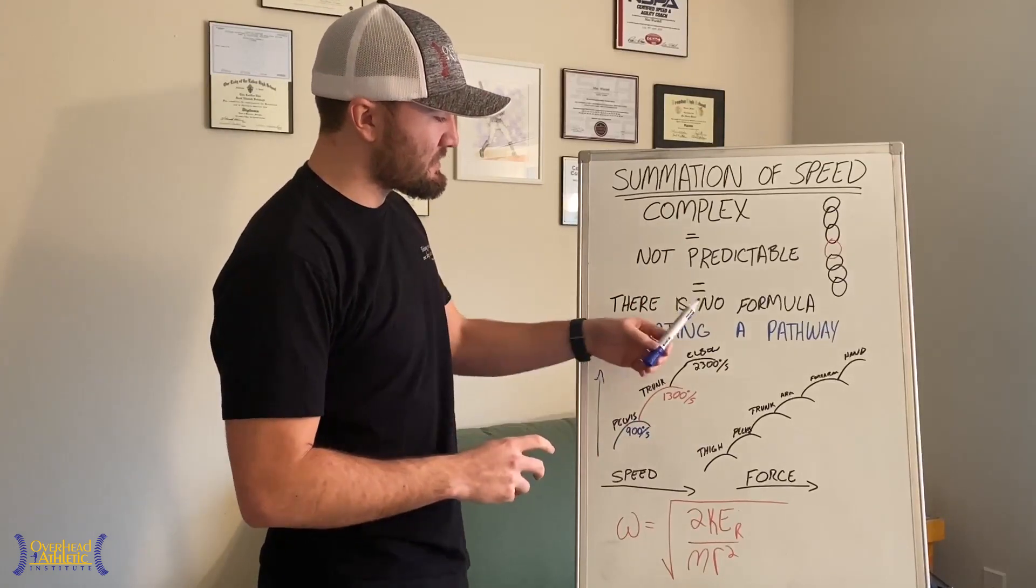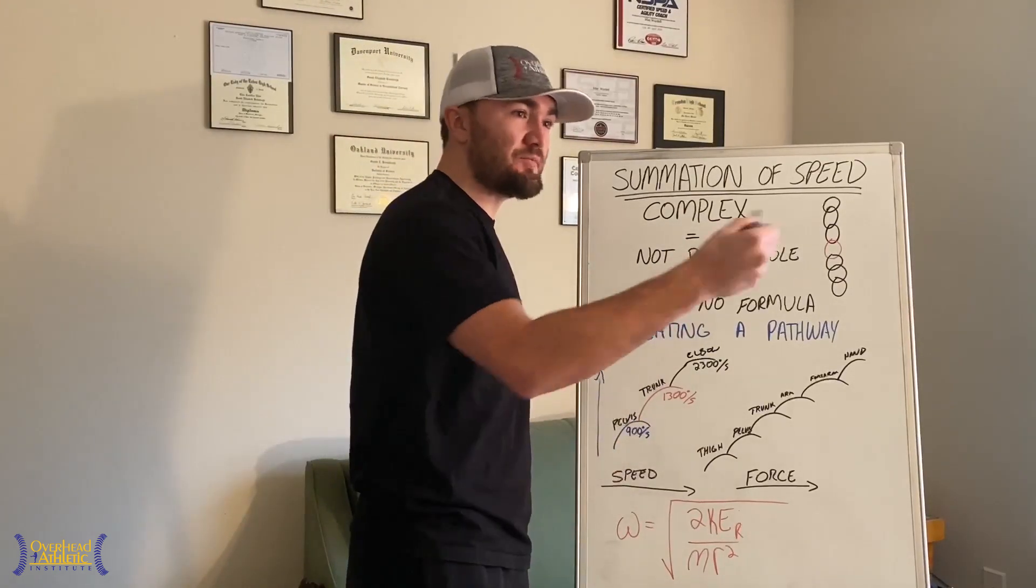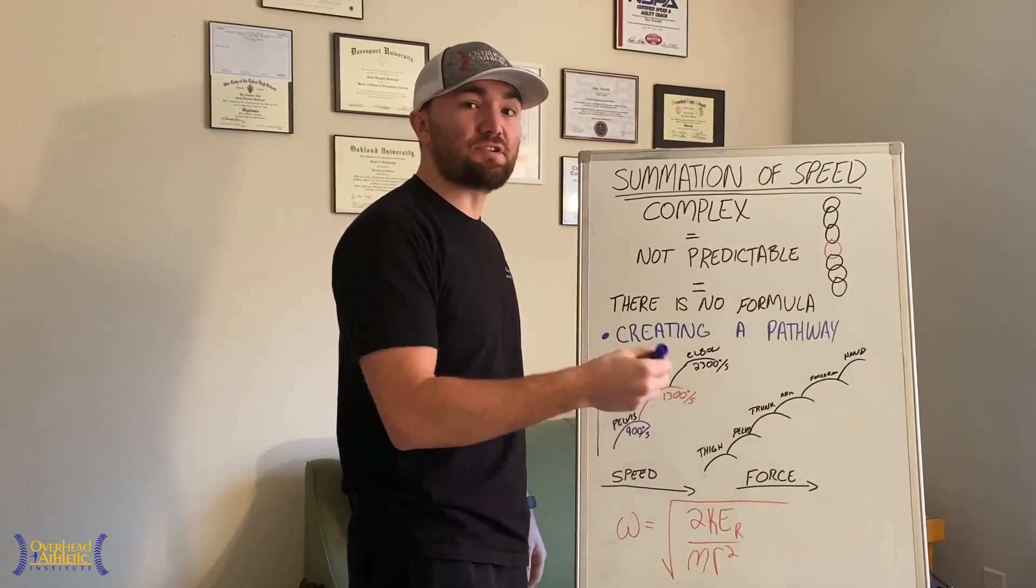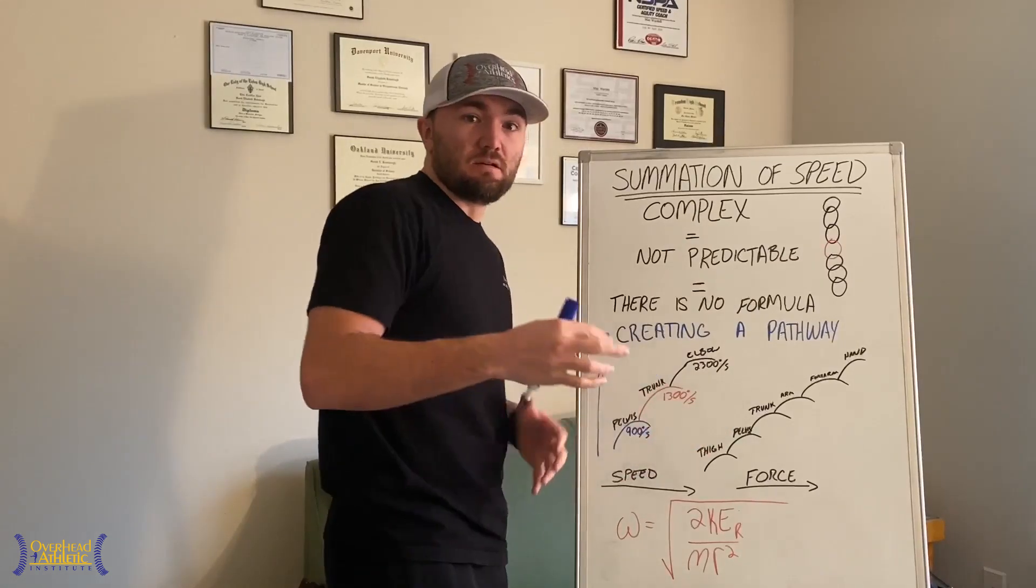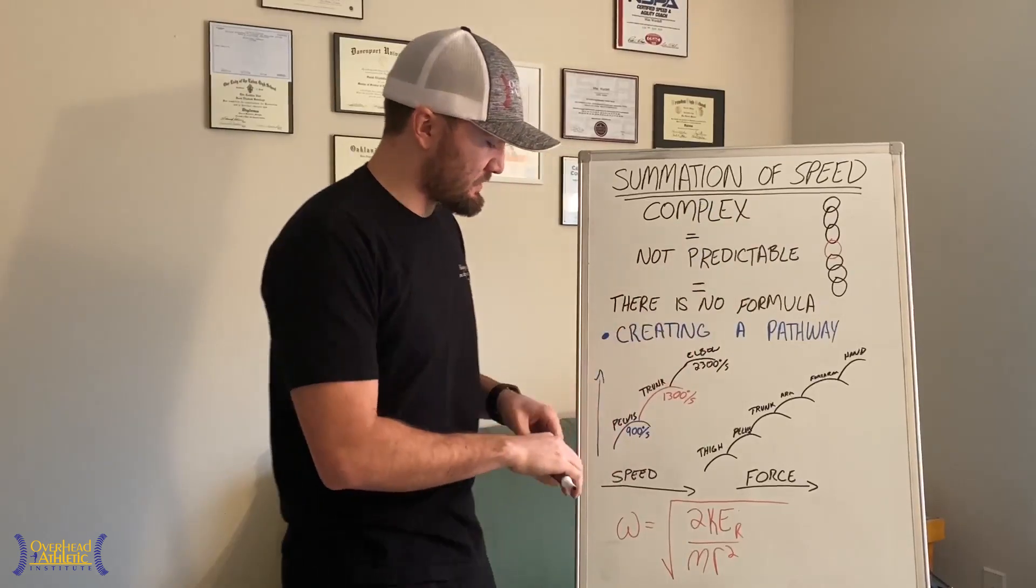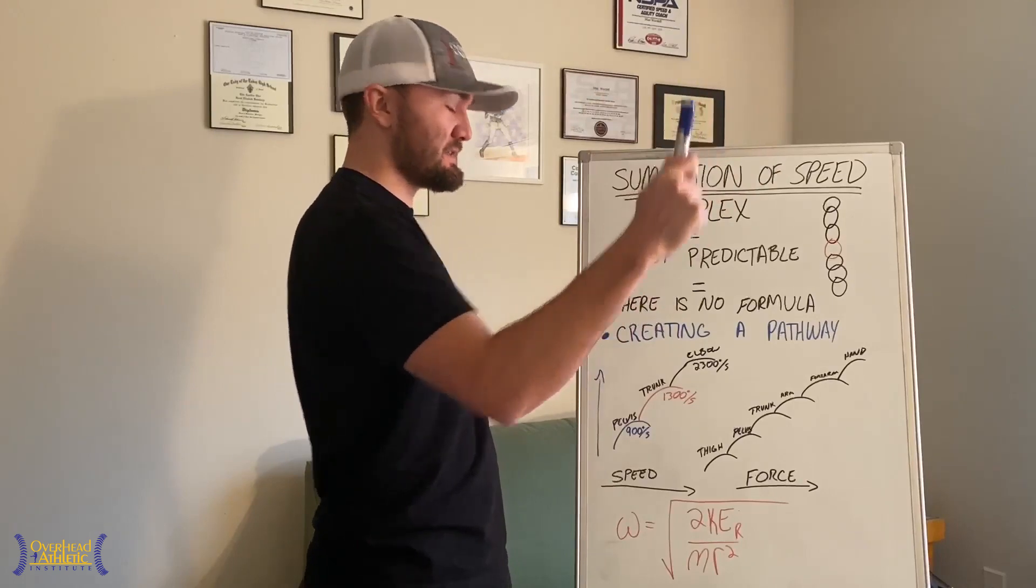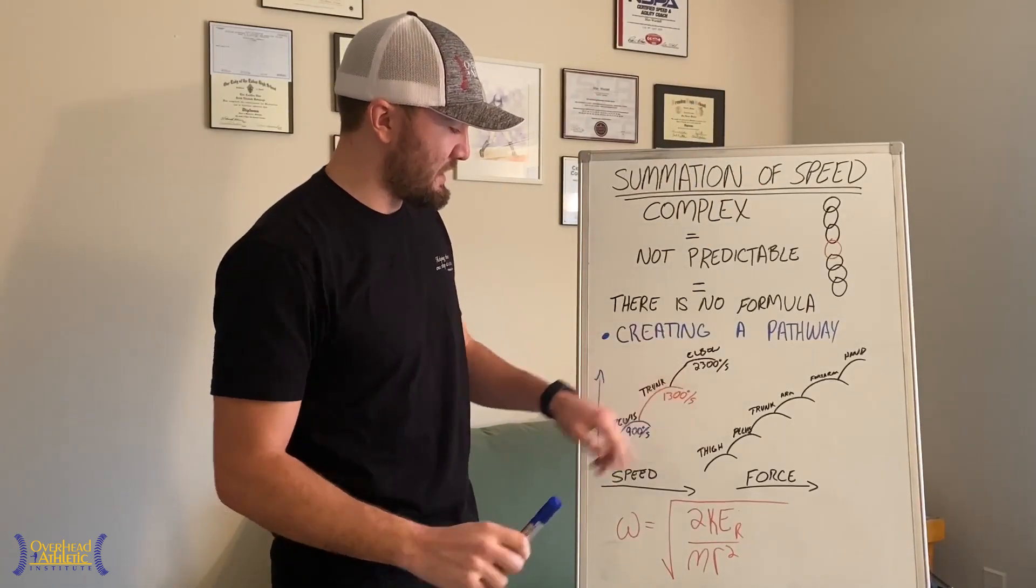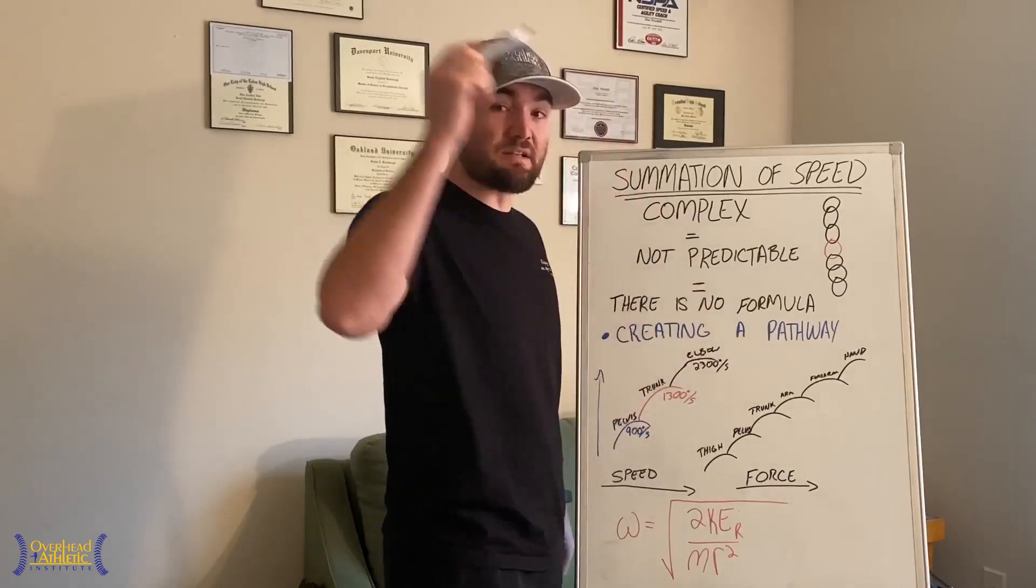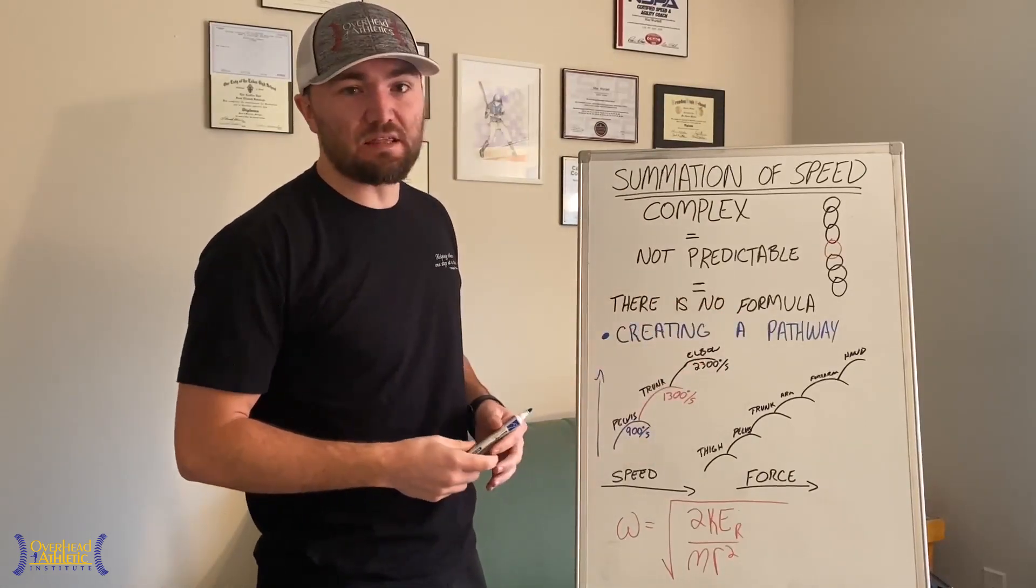How does speed summate? In order for speed to summate, we need to ensure that the next segment begins its rotation when the previous segment reaches its peak velocity. Therefore, we're taking the speed from the previous segment and moving into the next one. When the pelvis reaches its peak angular velocity of 900 degrees per second, the trunk begins to rotate. As it accelerates and reaches its peak, the elbow begins to extend out and around. That's how the body will move.